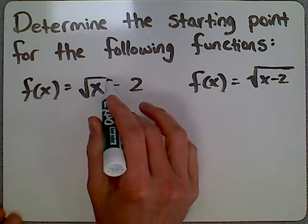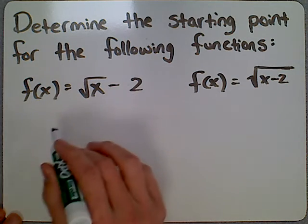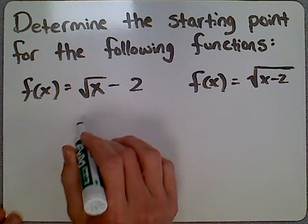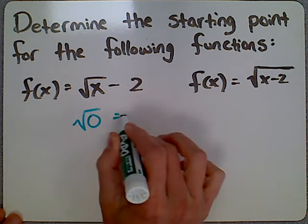So if you just have the square root of x and nothing else underneath, that x value is always 0. We can actually just plug in 0 there. The square root of 0 would be 0.